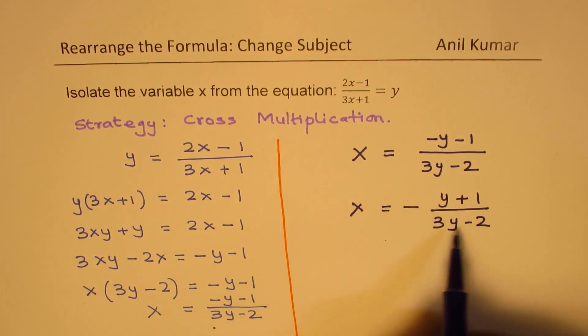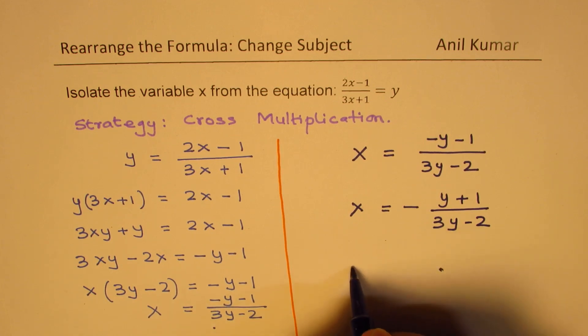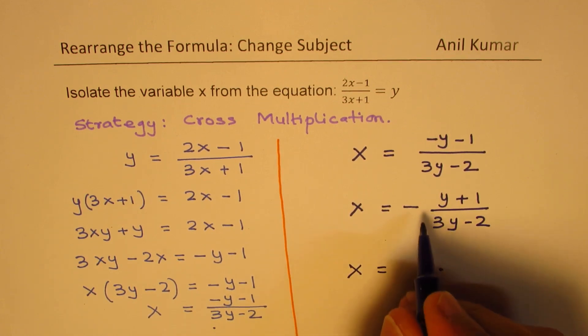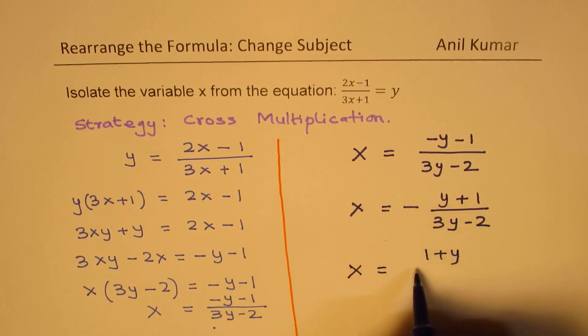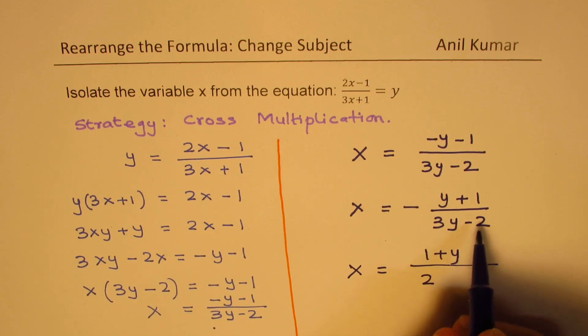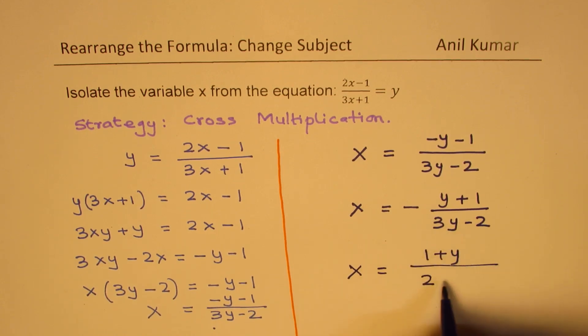Or, we could also take minus common factor here in the denominator and also write this expression as 1 plus y divided by 2 minus 3y. Taking minus common here gives us positive 2 and minus 3y.